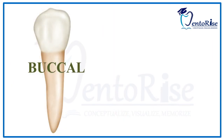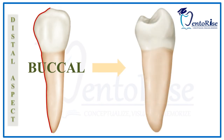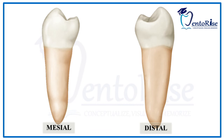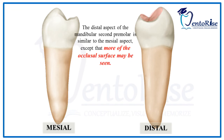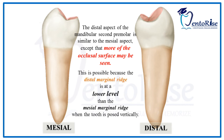This was all about the mesial aspect of this tooth. Talking about the distal aspect, we describe its features by making direct comparisons with the mesial aspect. In a permanent mandibular second premolar, the distal and mesial aspects are very similar except for one striking difference: more of the occlusal surface is seen from the distal aspect. This is because the distal marginal ridge is at a lower level than the mesial marginal ridge when the tooth is held vertically.